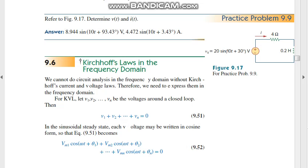For KVL, let V1, V2, up to Vn be the voltages around the closed loop. Then we can find that V1 plus V2 plus V3 and up to Vn is equal to zero.